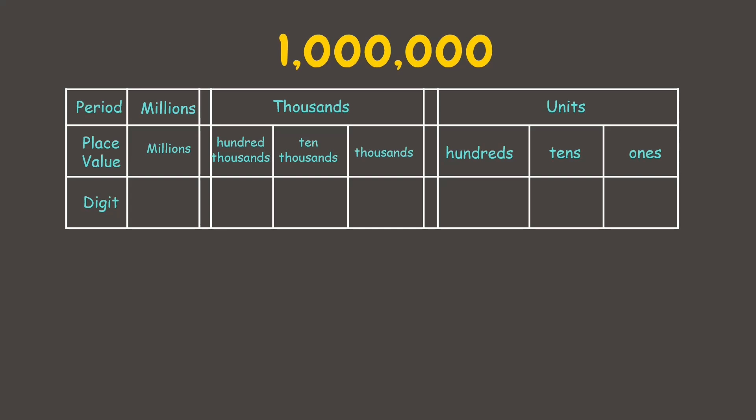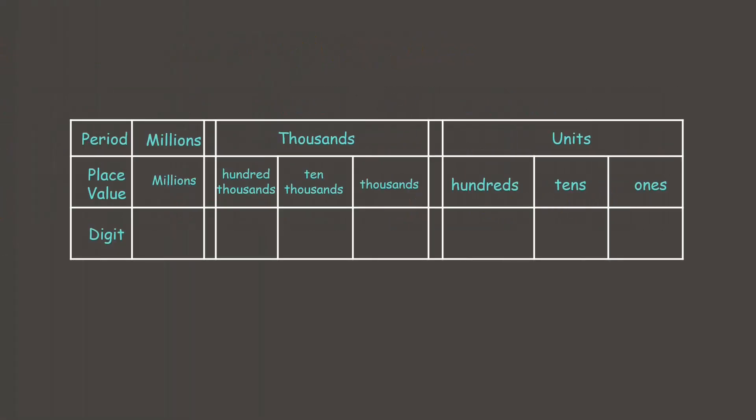And finally we have this number. Let's place each digit in its correct place value. So here we start from 1 under the millions period, so that's one million. And since there's no more under thousands or units period, this is now how we read this number. It is one million.